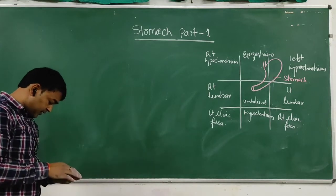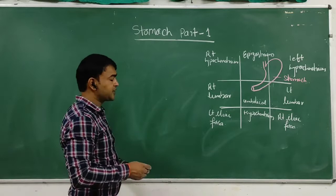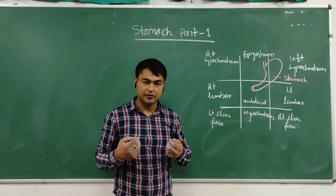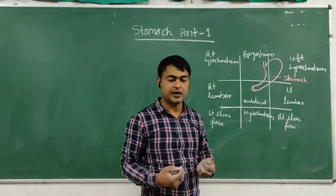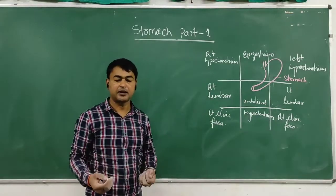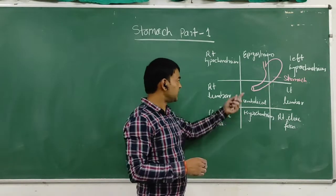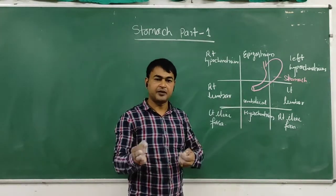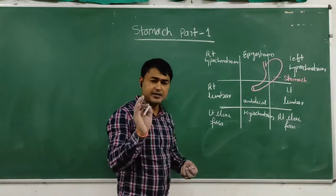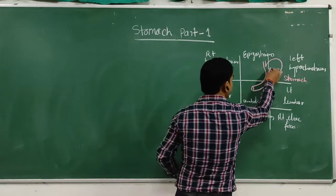The shape of the stomach is variable from person to person. In a normal healthy person, the shape is like a J. In the case of a fat person, the shape is more horizontal. The average size of the adult stomach is about 25 centimeters.